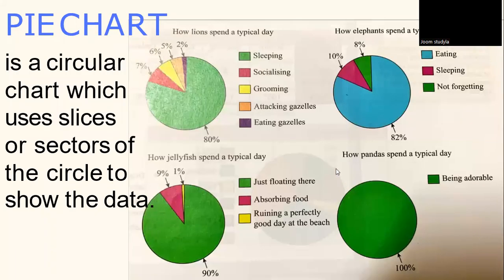And finally, we have the data can be interpreted in a form of pie chart. What is a pie chart? Pie chart is a circular chart which uses slices or sectors of the circle to show the data.